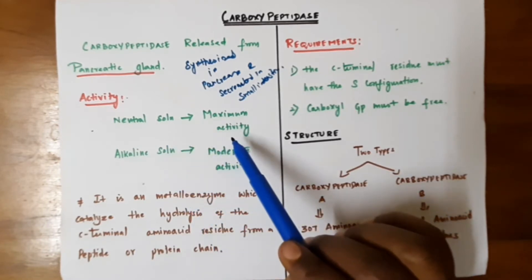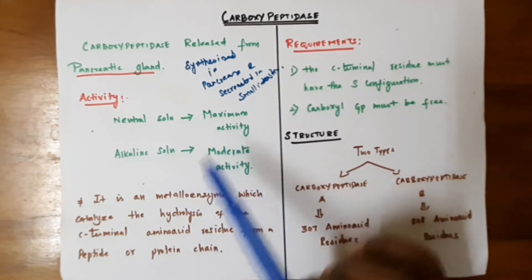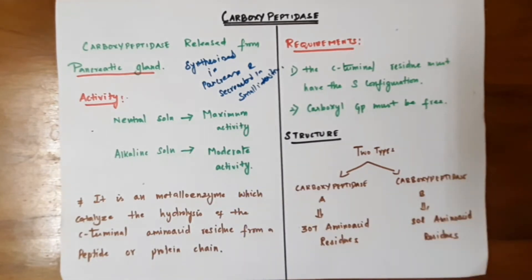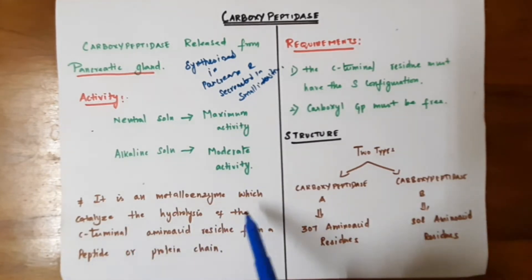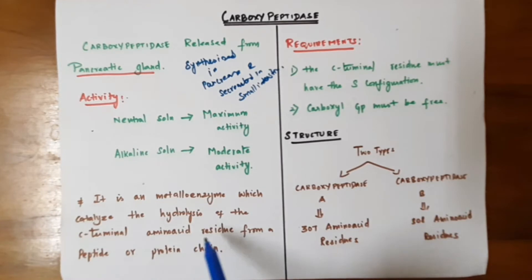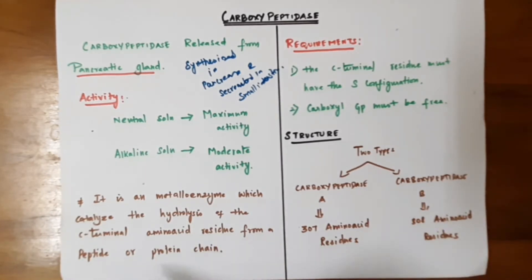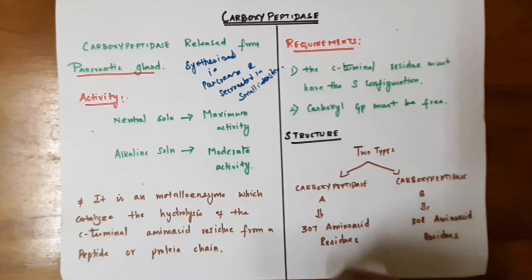Carboxypeptidase has different activity in different solutions: at neutral solution it shows maximum activity, and in alkaline solution it shows moderate activity. It is a hydrolytic enzyme which catalyzes the hydrolysis of the C-terminal amino acid residue from a peptide or protein chain.